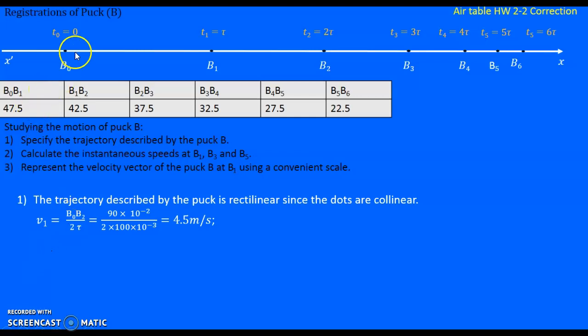vB1 equals B0B2, so it's B0B1 plus B1B2. So it is 47.5 plus 42.5, which equals 90 times 10^-2 over 2τ. τ equals 100 milliseconds like the previous part about puck A. So it equals 4.5 meters per second.